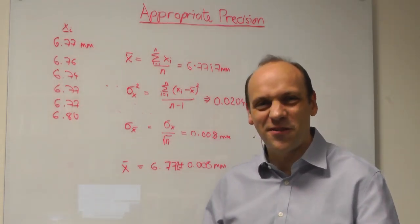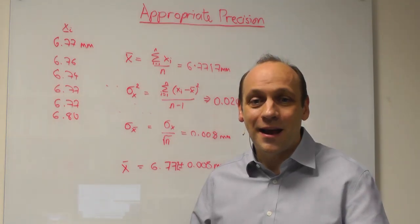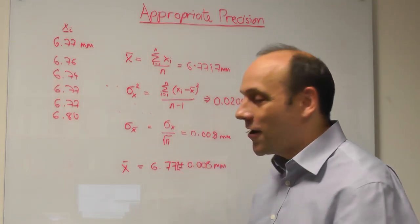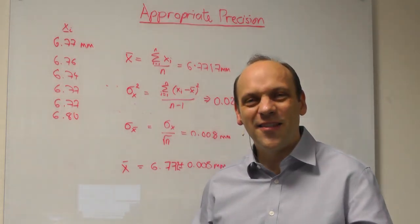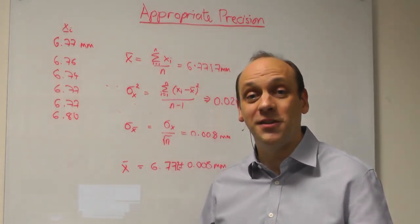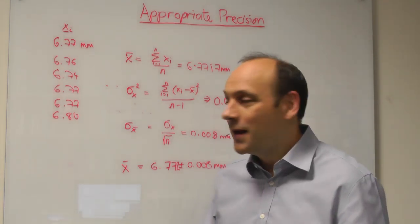Now, I've written the uncertainty down only to one digit of precision, or one significant figure. And that's very important. That's a general rule of thumb as to how much precision we should use.